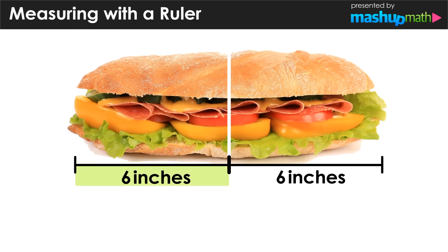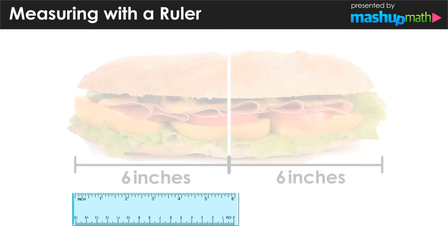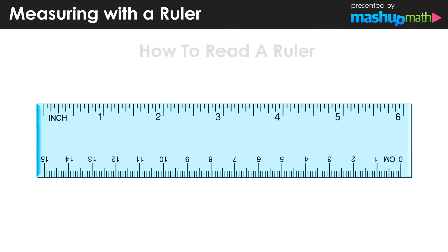For this lesson we are going to explore using a ruler that has that same length of six inches, and we're going to take a look at what the symbols and markings on the ruler mean and how we can use them to measure different sized objects.